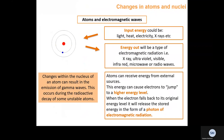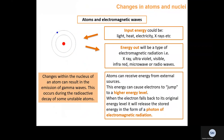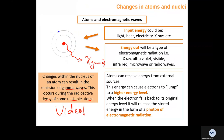Where do EM waves come from? In an atom, changes within the nucleus can result in the emission of gamma rays — this occurs during radioactive decay of unstable atoms. There is a separate video on radioactivity. Gamma rays come from the nucleus and are emitted from nuclei that have a lot of energy, allowing the nucleus to reduce its energy.